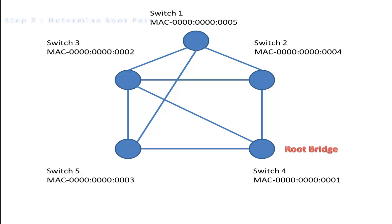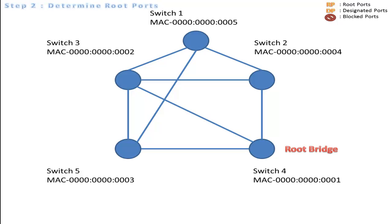The second step is to determine the root ports for all bridges except for the root bridge. Generally, all the bridge ports that are directly connected to the root bridge will be the root port. In this example, we assume that all networks have the same bandwidth of 100 megabits per second. Thus the following ports are the root ports.